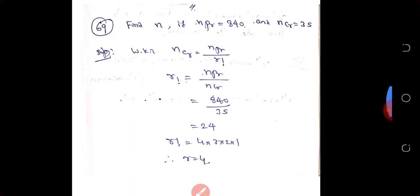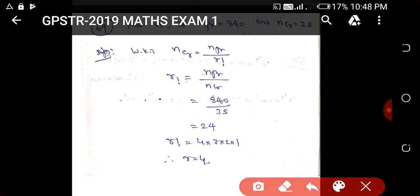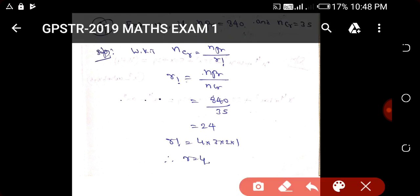Next question: find n, given nPr equals 840 and nCr equals 35. We know that nCr equals nPr divided by r factorial, so r factorial equals nPr divided by nCr.